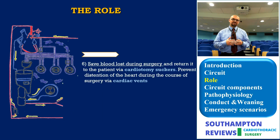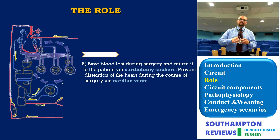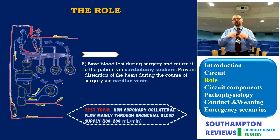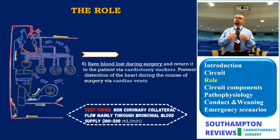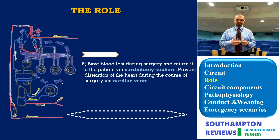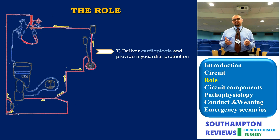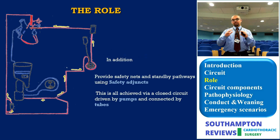Also returning and saving the blood loss during surgery, whether from the field or from inside the heart, to maintain decompression. As we will discuss in the next section, there is non-coronary collateral flow which leads to distension of the heart while on bypass. We need means to evacuate the heart from that, and also to protect the blood lost in the field. Last but not least, delivering cardioplegia — this is of course the cornerstone of myocardial protection.